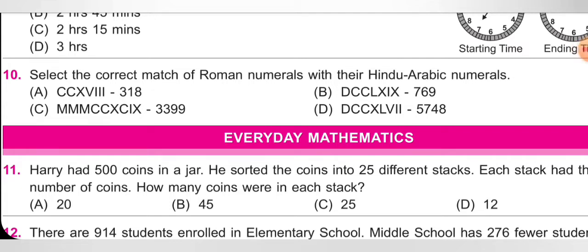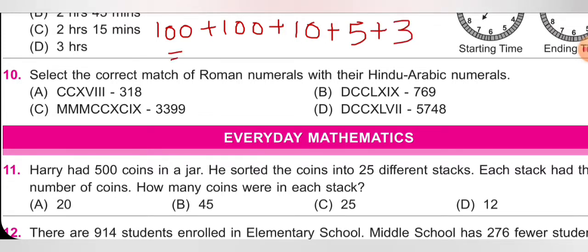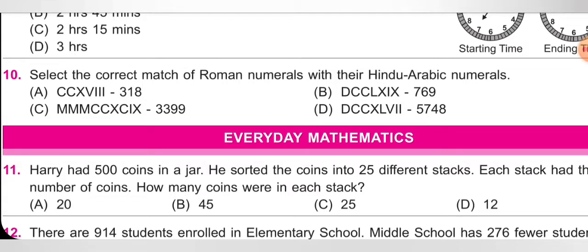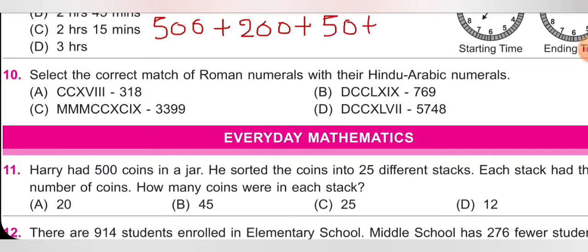Next question: select the correct match of Roman numerals with their Hindu-Arabic numerals. Option A: 2C + X + V + III = 200 + 10 + 5 + 3 = 218 — wrong. Option B: D + 2C + L + X + IX = 500 + 200 + 50 + 10 + 9 = 769. Option B is correct.